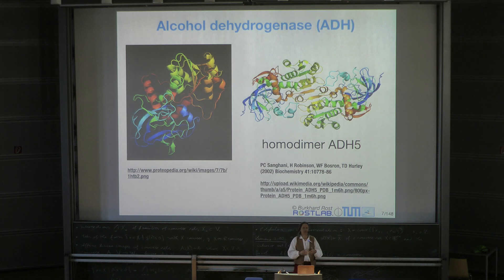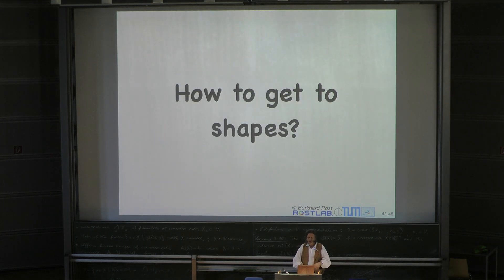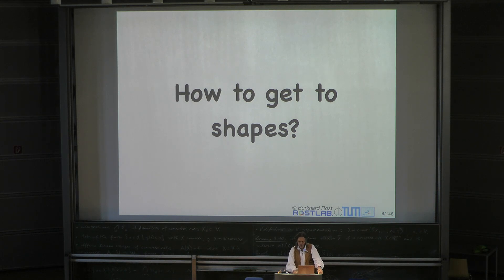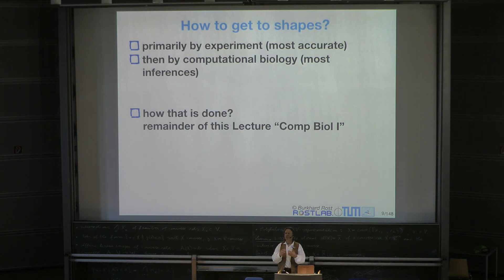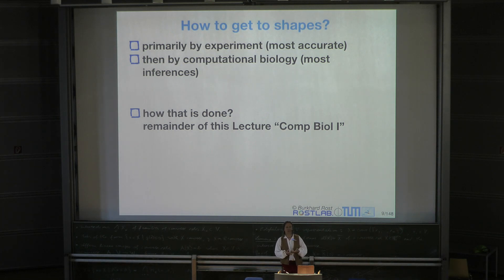We cannot put that into a number, so we cannot compare these numbers. We can put these numbers into hierarchies, but then it's not that easy to compare these hierarchies. How do we get these shapes, the three-dimensional shapes? You've mentioned X-ray crystallography. So that's one way—by experiment. X-ray crystallography is in fact the most frequently used way, in which you take the protein out of its natural environment and put it into a state in which it forms crystals.